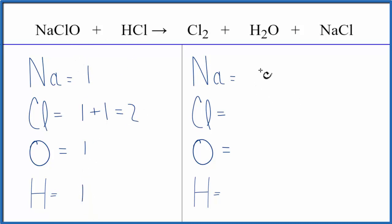On the product side we have one sodium and we have the one chlorine and we actually have the two chlorines here so two plus the one, three chlorine atoms, one oxygen and two hydrogens.